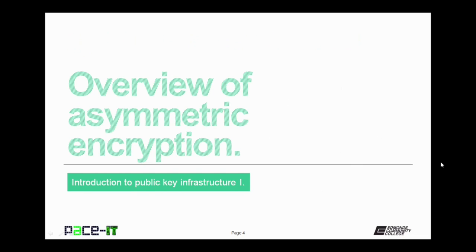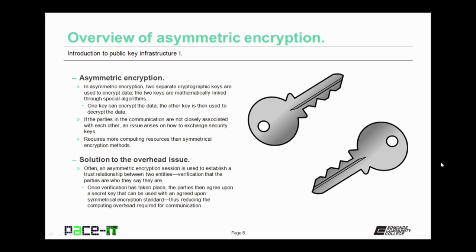We will begin with an overview of asymmetric encryption. In asymmetric encryption, two separate cryptographic keys are used to encrypt data. The two keys are mathematically linked through special algorithms. One key can encrypt the data, the other key is then used to decrypt the data. The key that encrypts cannot decrypt, and the key that decrypts cannot encrypt.